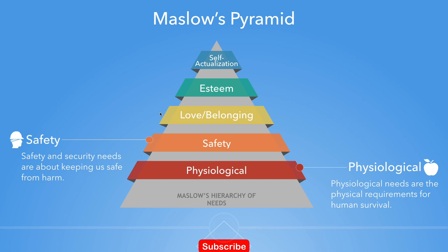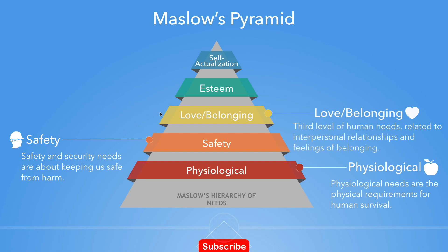After physiological and safety needs are fulfilled, the third level of human need is interpersonal and involves feelings of belongingness. According to Maslow, humans need to feel a sense of belonging and acceptance among social groups, regardless of whether these groups are large or small. Humans need to love and be loved, both sexually and non-sexually, by others.